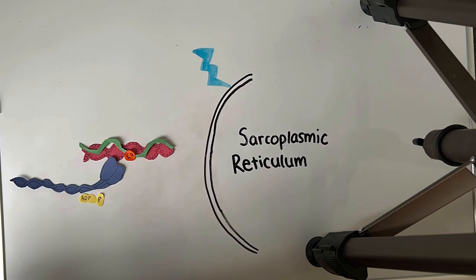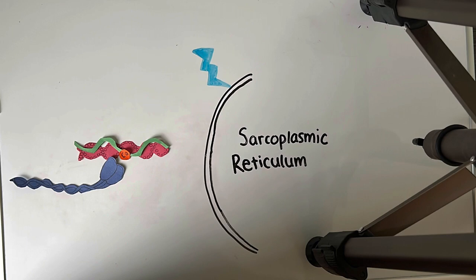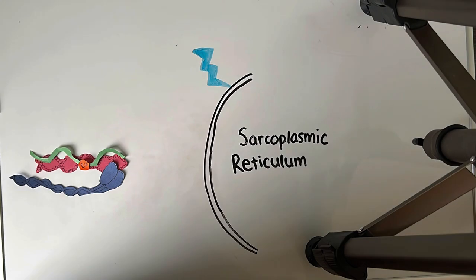Now, actin and myosin are able to connect. Myosin uses all of the energy it can from ATP to slide actin over it. This is known as the power stroke and what we experience as muscle contraction.